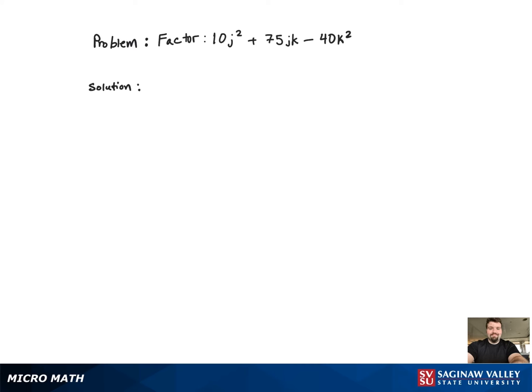For this factoring problem, we will begin by pulling out the greatest common factor, the 5.